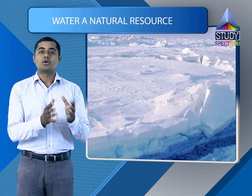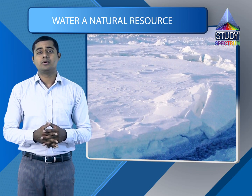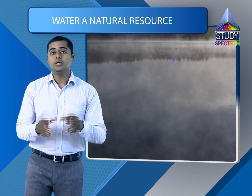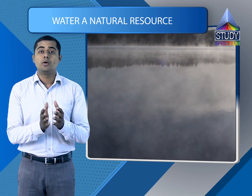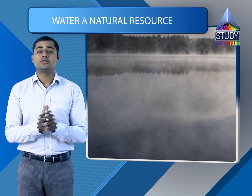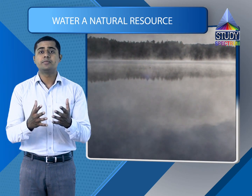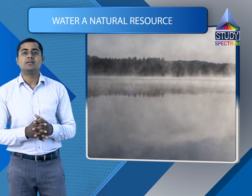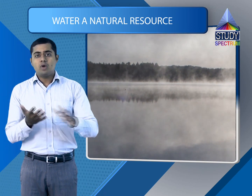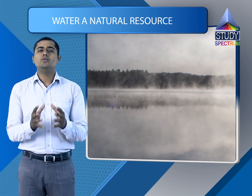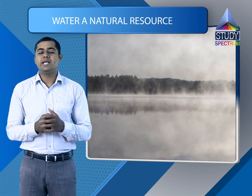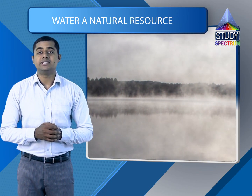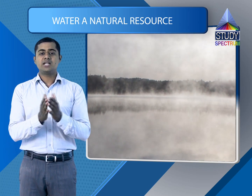The third form is obviously the gaseous state — we call it water vapor. We get water on this earth in the form of water vapors. In the air, in the atmosphere, when there is more water vapor in the air we call it humid air. Most of the time in the rainy season and near coastal regions there is always humid air — we get very sweaty at that time because there is more content of water vapors in the atmosphere. So these are the three forms of water.